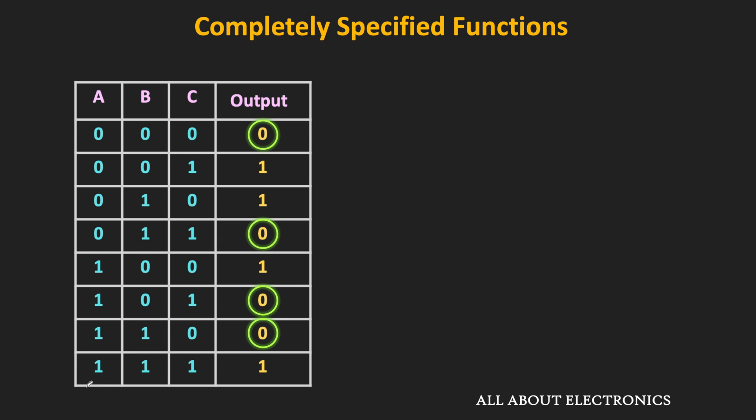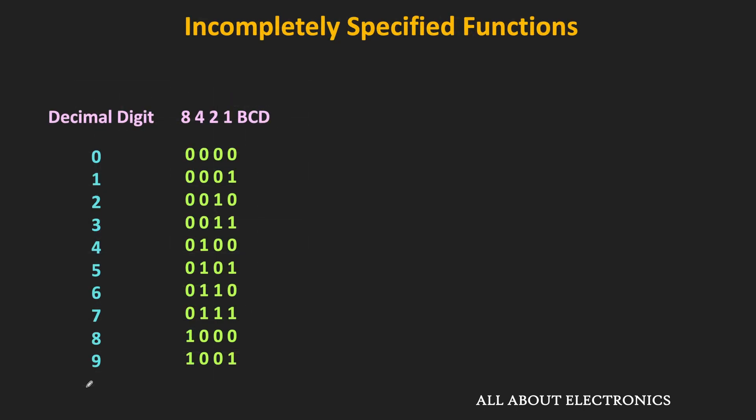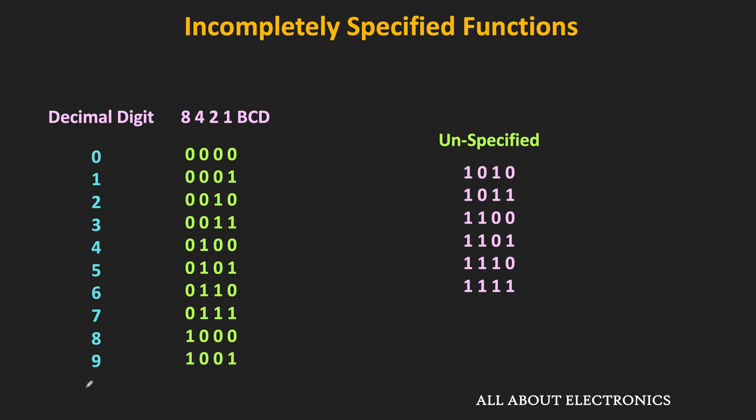But in practice, in some applications, the function is not specified for certain input combinations. For example, in the 8421 BCD code, these 6 combinations are unspecified and these 6 codes are the invalid codes. So the output for these combinations could be either 0 or 1. But since they are the invalid codes, we actually don't care what the output is for these combinations. Such input combinations for which the output is unspecified are called the don't care combinations.